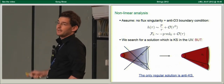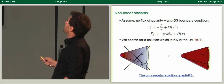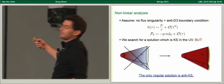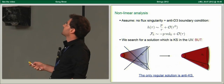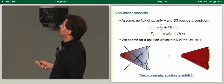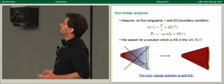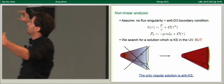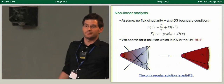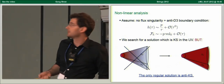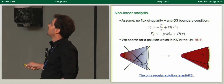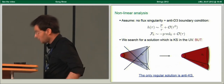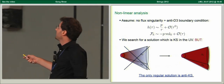We assume that there is no flux singularity — that the solution is regular — and impose the following anti-D3 boundary conditions. Note that the warp factor singularity came from the smeared anti-D3 source. We search for a solution which has the same UV asymptotics as the Klebanov-Strassler solution, expecting something with negative charge in the infrared glued to positive charge in the UV. We prove that such a solution does not exist. In fact, the only regular solution compatible with this boundary condition is the anti-Klebanov-Strassler solution, which has negative charge all the way up to the UV and does not break supersymmetry.